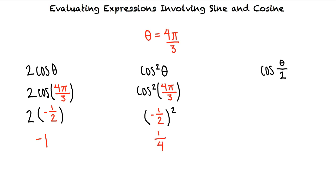Finally, we substitute 4π/3 in for θ in the third expression. We must first divide 4π/3 by 2, which results in 2π/3. Using our knowledge of common trigonometric angles, we know that the cosine of 2π/3 is negative 1/2.